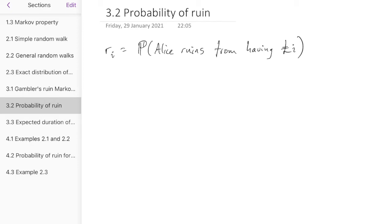So what can we say about R_i? Well, there's a couple of things we can say straight away. One thing that we can say straight away is we can say what the value of R_0 is. So R_0 is the probability Alice ruins from the point where she has zero pounds. But if Alice has zero pounds, she's ruined already, so she's definitely ruined, so R_0 equals 1.